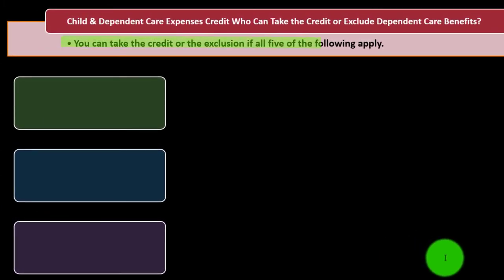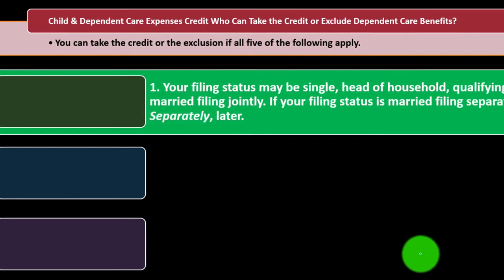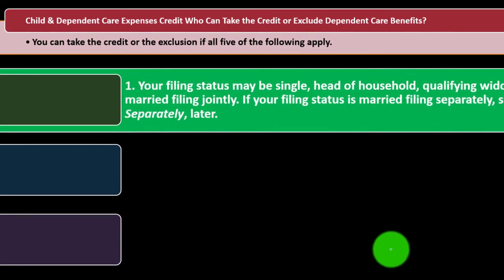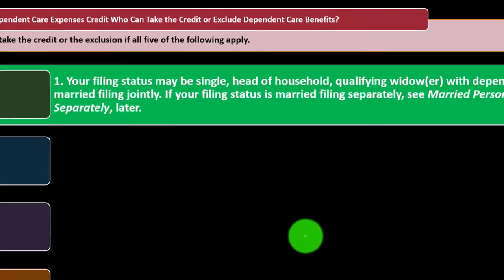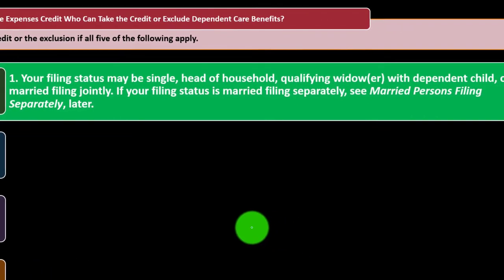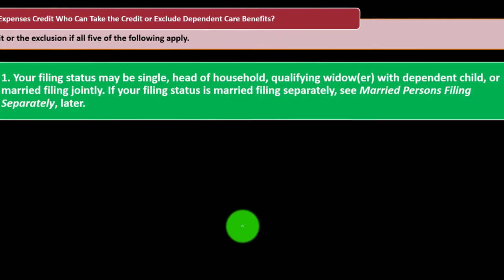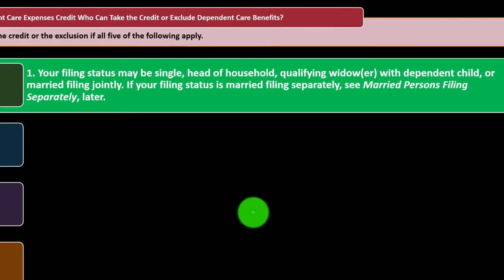You can take the credit or exclusion if all five of the following apply. Number one: your filing status may be single, head of household, qualified widow or widower with a dependent child, or married filing jointly.